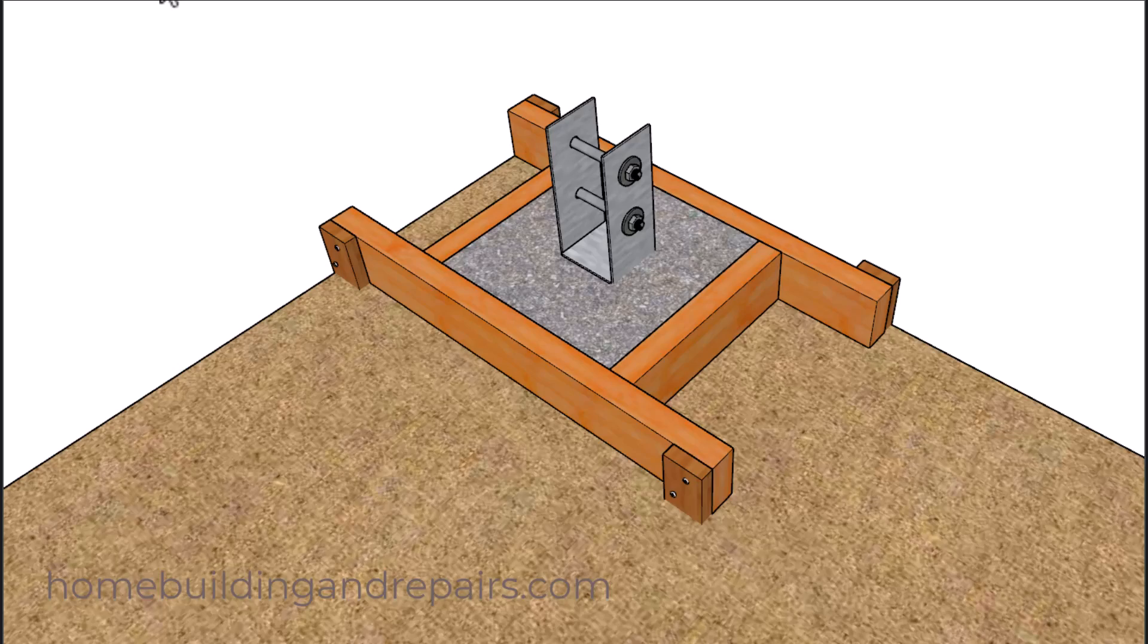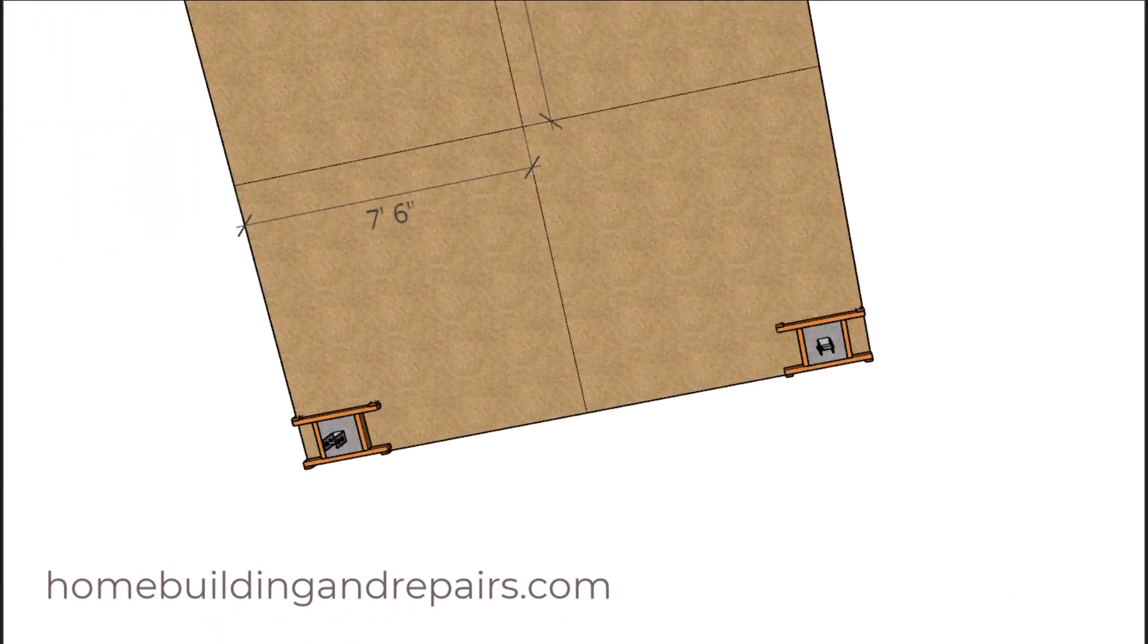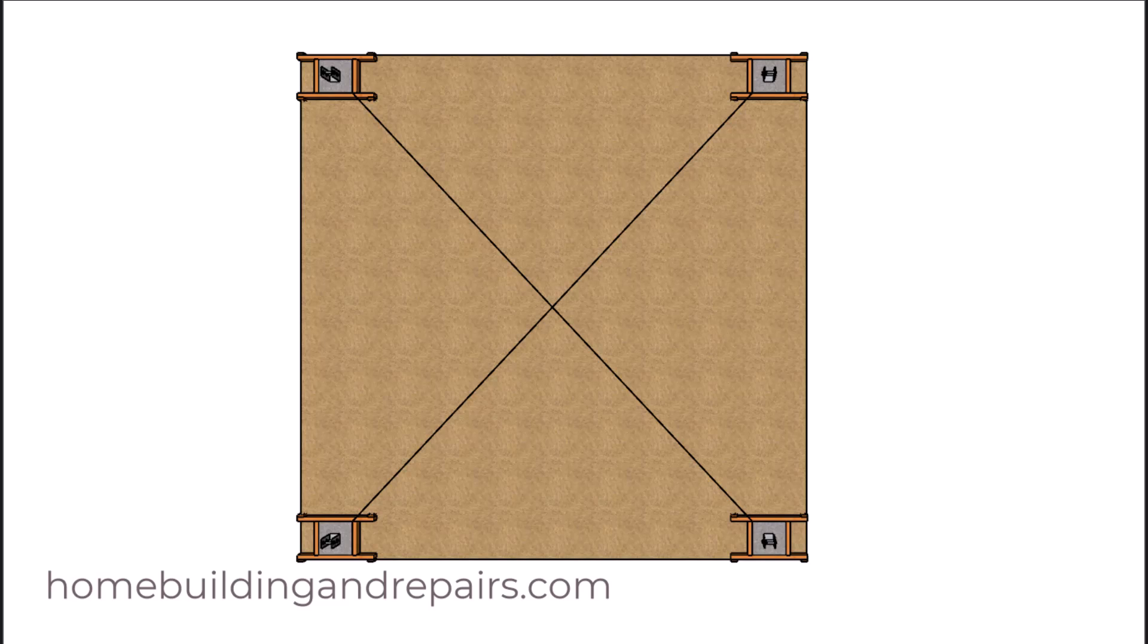So let's go ahead and get started with what it would look like if we were squaring the footings on a level surface. To do that you're simply going to come from the same point on each side of the footings and then measure those lines.